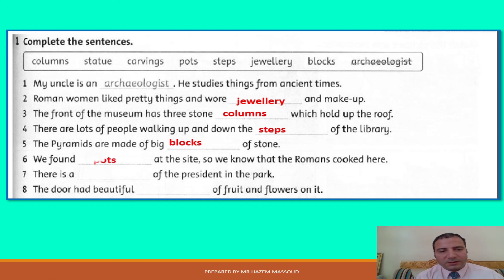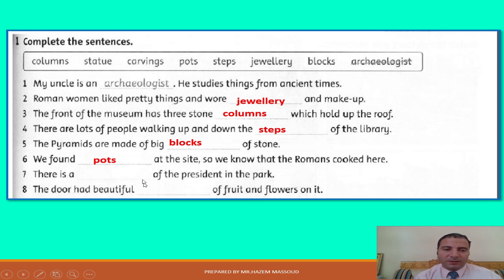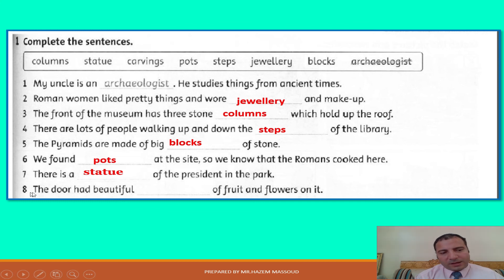Excellent — pots. Number seven: there is a dash of the president in the park — yes, it's statue. Number eight: the door had beautiful dash of fruit and flowers on it — yes, it's carvings.